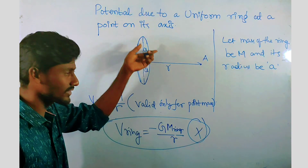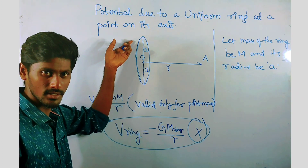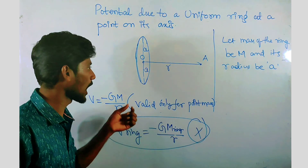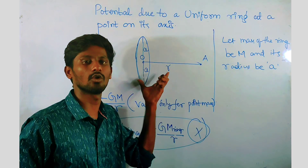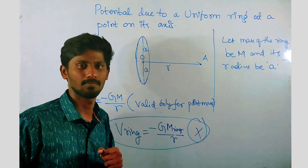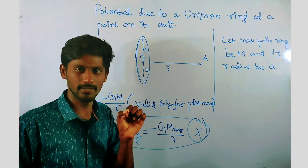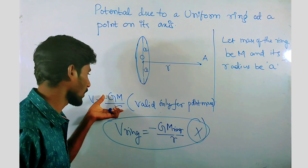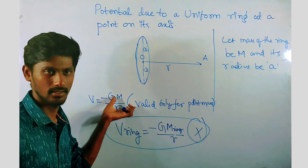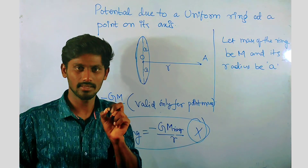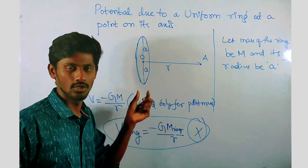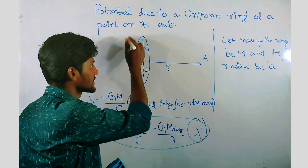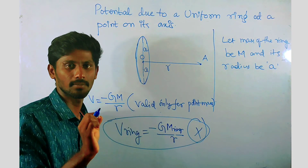In our case we have a ring, so this is not a point mass. We cannot directly apply this formula to get the potential at point A due to the whole ring. So what we do is take a very small element — a very, very small section on this ring — which can be considered as a point mass.